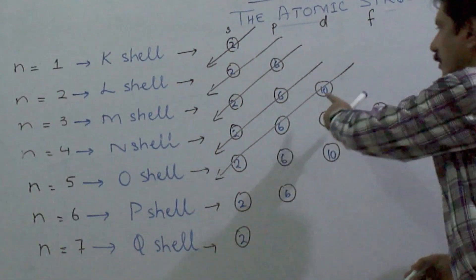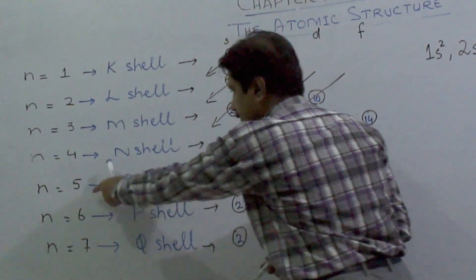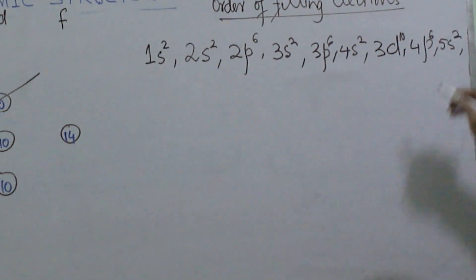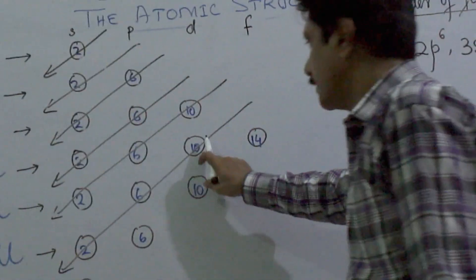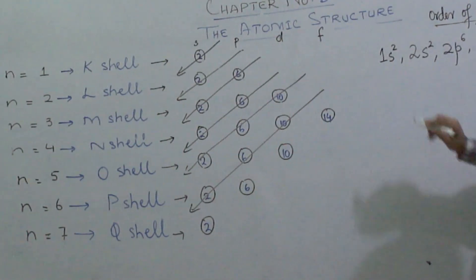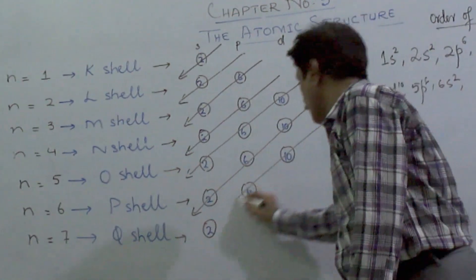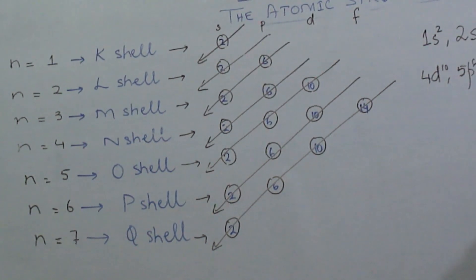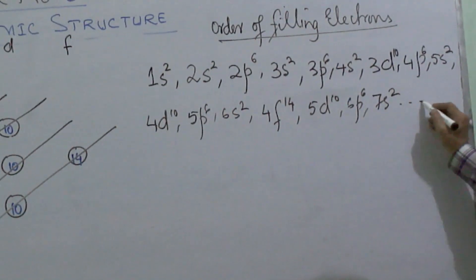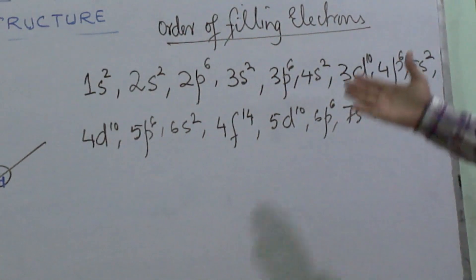Then, following this arrow, ten electrons will be entered into the D orbital of third shell, followed by six electrons in 4P and two electrons in 5S orbitals: 3D10, 4P6, 5S2. Then 10 electrons in 4D, 6 electrons in 5P, 2 electrons in 6S: 4D10, 5P6, 6S2. Now 4F14, 5D10, 6P6, 7S2. This is the simple order of filling electrons among various shells and subshells of the atom following the Aufbau principle.